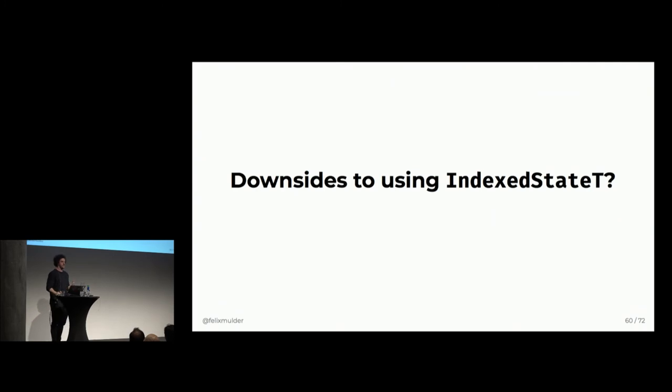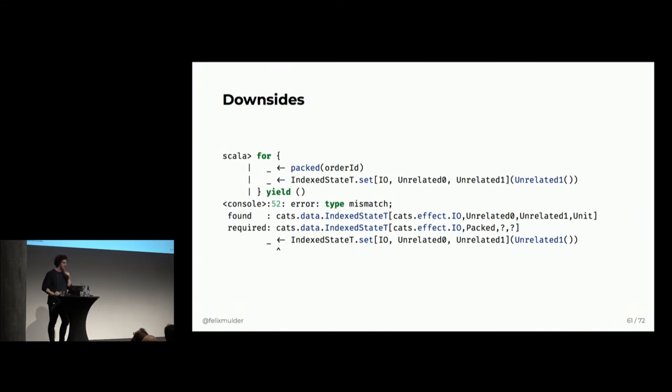But, of course, it's not all magical ponytails and fairies, right? But there has to be some downside to using index state. And, for instance, what if you have two unrelated states that you want to modify in the same program? So, you want to say, we're going to do the packaging and the shipping, but we're also going to notify the user. And we don't want to do that twice. So, we have a state machine for that as well. All right. But now, you can't really put these in the same for comprehension because the monads don't line up. All right. So, what do we do about this?